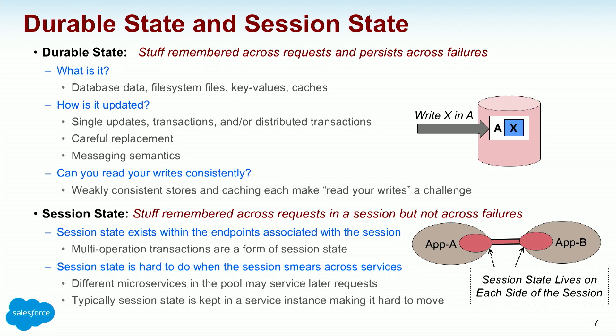Session state is stuff that is remembered across a session — two computer pieces of programming talking to each other — but not necessarily across crashes. Session state exists within the endpoints associated with the session. Multiple operations end up being a form of session state. Session state is hard to do when the second request to a microservice doesn't necessarily land in the same place as the first. Different microservices can get different stuff, so session state kind of falls away when you have microservices.